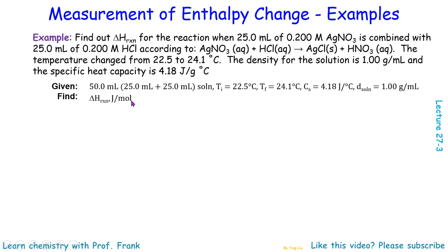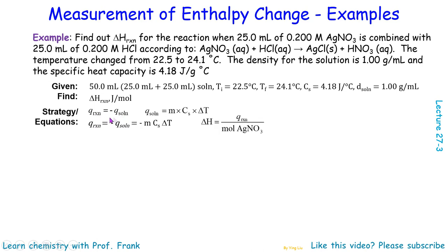We need to find the ΔH reaction in joules per mole. If the reaction gives off heat, then the solution receives that heat. We can rearrange the equations: Q heat of reaction equals negative heat of solution, equals negative M times C times ΔT. Then the enthalpy change can be calculated using the heat of reaction divided by the number of moles. Now we are ready to solve this problem.